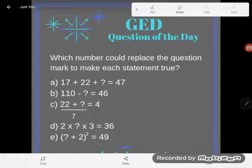It says which number could replace the question mark to make each statement true? So like I look at A, A says 17 plus 22 plus some number is equal to 47.